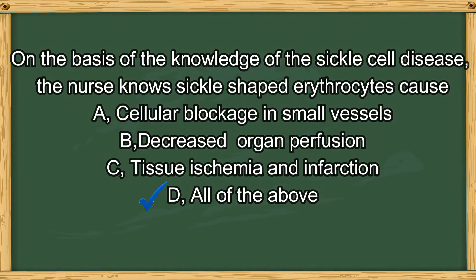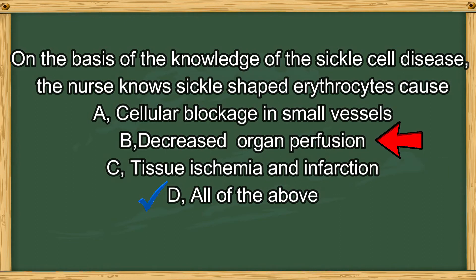The answer is D, all of the above. Those blood cells form into the shape of a sickle, like the letter S, so those cells stick together and cannot easily move through blood vessels — answer A is correct. This causes tissue ischemia and infarction, so C is also correct. And it decreases organ perfusion, so B is also correct. Therefore the answer is D.